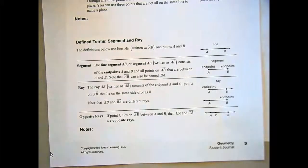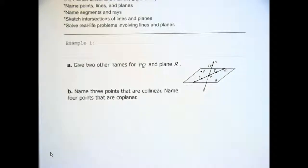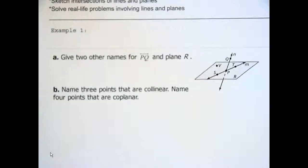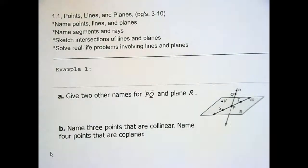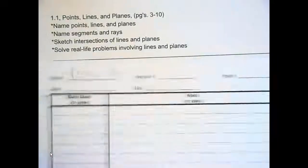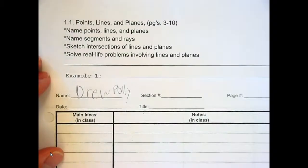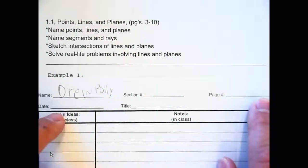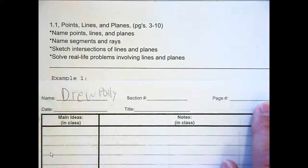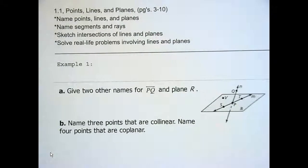We're going to pause right there. I want everyone to take out yesterday's assignment, please. Go ahead and close your textbooks. We're going to go through some examples in this class. This is example one: give two other names for line PQ and plane R. So everyone look at the top of your note page. Our section number is 1.1. Our title is points, lines, planes. Our page numbers are 3 through 10, and these are our learning goals. We're going to go through some examples as a class.